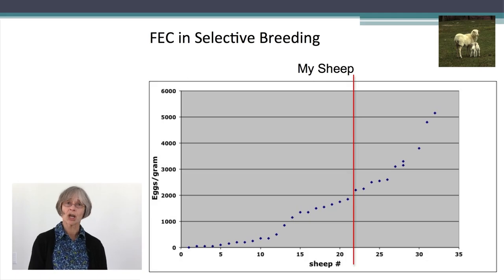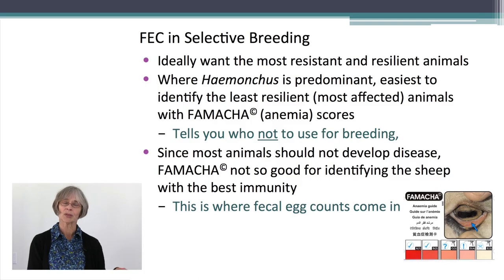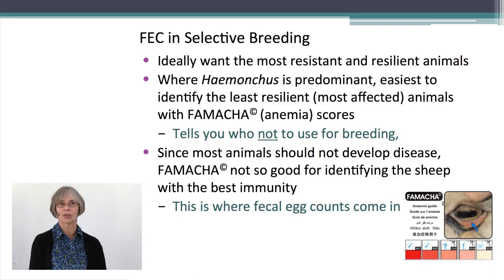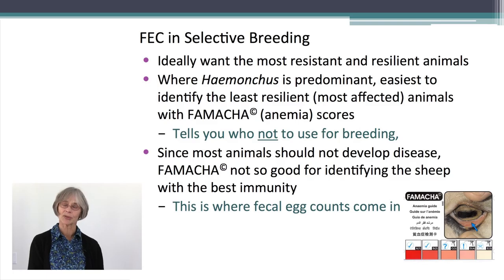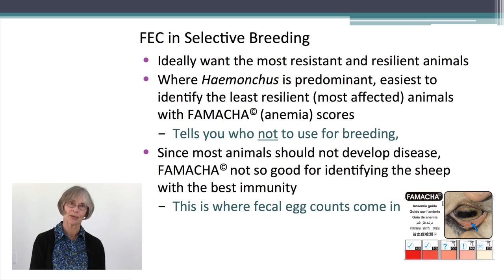We know what to do with that top 30%: don't breed them. Much of their susceptibility is genetically based — keep them out of your breeding program. The problem is we also want to identify the most resistant animals. It's pretty easy to identify the most susceptible 30% using the FAMACHA system, because there you're directly assessing anemia. But most animals can control their parasites, so when you look at who to select for breeding, that becomes a more difficult job based on FAMACHA alone. Here is where fecal egg counts can be really helpful in determining animals with higher levels of resistance.